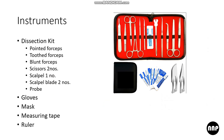Apart from books, you will need a dissection kit. The basic kit should include a pointed forceps, toothed forceps, blunt forceps, one scissor, a scalpel with blades, and a probe. Gloves depend on whether you are comfortable with formalin; a mask may be needed initially but becomes unnecessary over time. A measuring tape is very important for Surface Anatomy. Vishram Singh and BD Chaurasia include surface anatomy at the end of each chapter or the book, so you don't need a separate book for it.